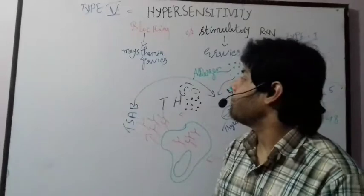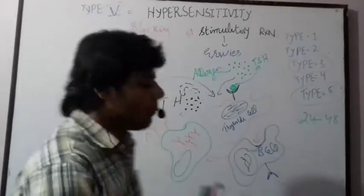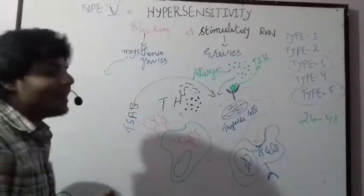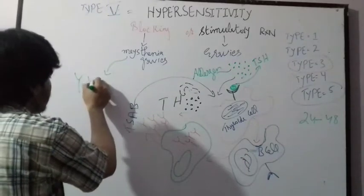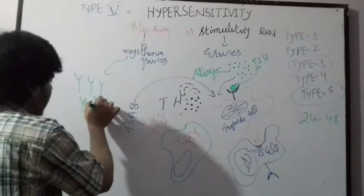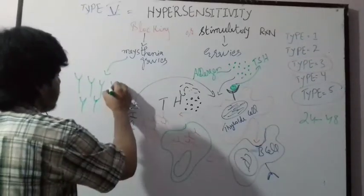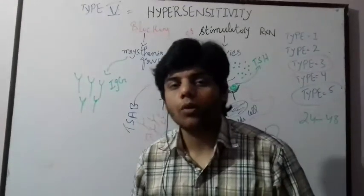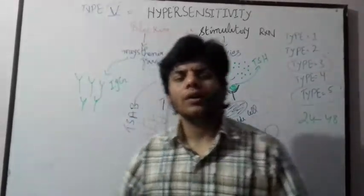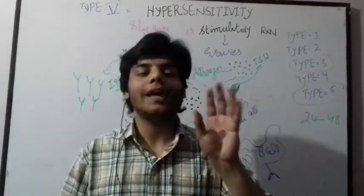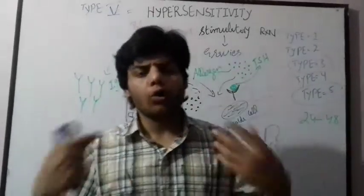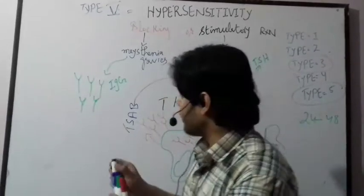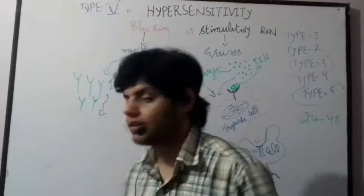Now, what happens in Myasthenia gravis? The same general process occurs, but Myasthenia gravis is a little different. In this case, IgG antibodies are activated and secreted by plasma cells. These IgG antibodies cause disturbance at the neuromuscular junction — it is actually a neuromuscular disease. When a large number of IgG antibodies are secreted, neuromuscular disease will occur.